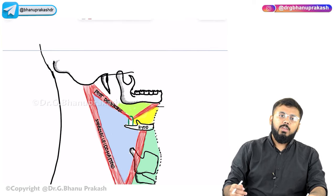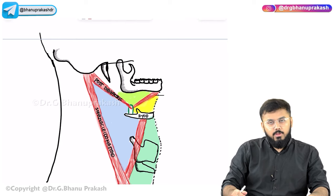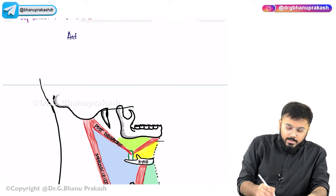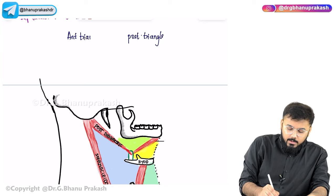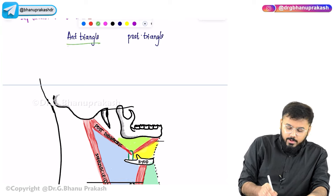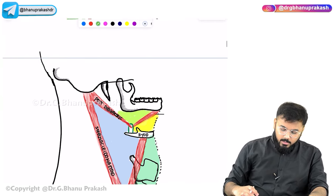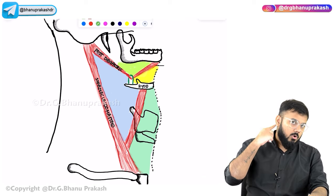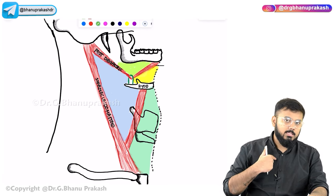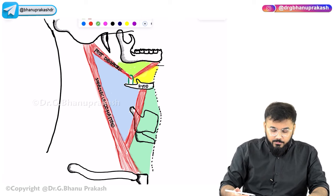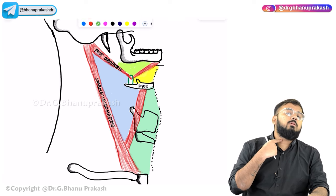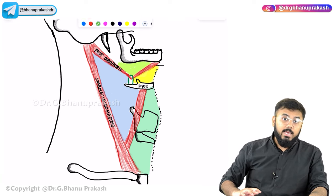Now we discuss the neck triangles. The neck has two main triangles: the anterior triangle and the posterior triangle. Key muscles in this region include the sternocleidomastoid (from mastoid process to sternum and clavicle), and the digastric muscle, which has an anterior belly and a posterior belly connected by a tendinous arch on the hyoid bone. The omohyoid muscle is also present inferiorly.